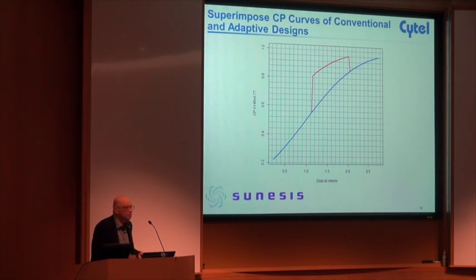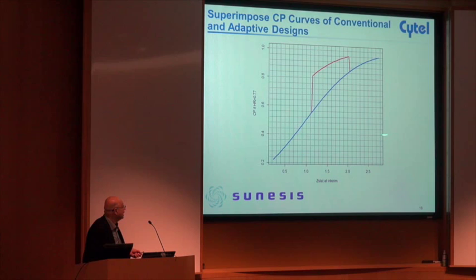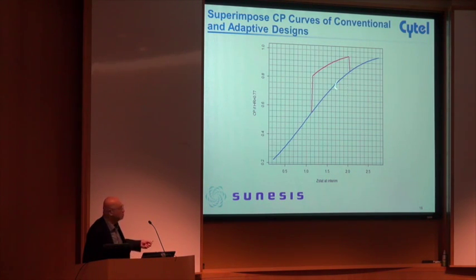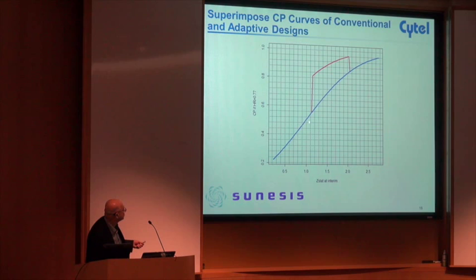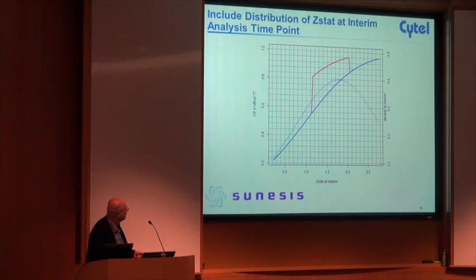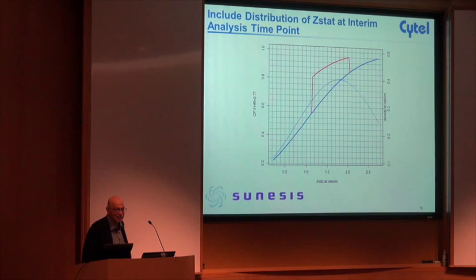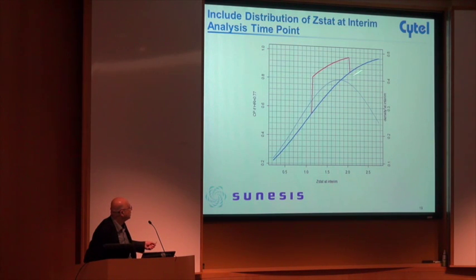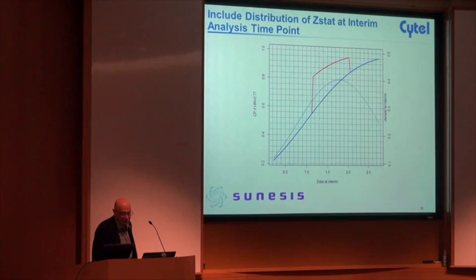You can start out and say, 'I'm going to do the best possible group sequential design I can with the resources I have,' and then there's nothing to stop you from adding an adaptive component to it. The conditional power gets boosted up if the hazard ratio is not that great. The probability of entering the promising zone is roughly a third of the time. It helps you only when you enter the promising zone.